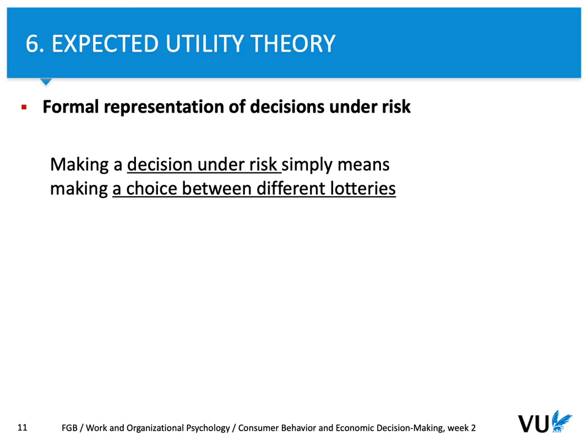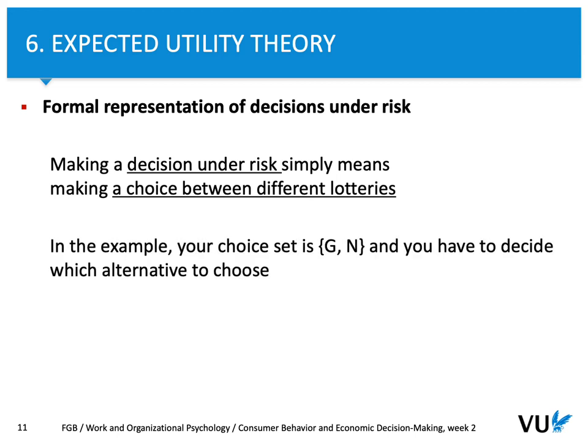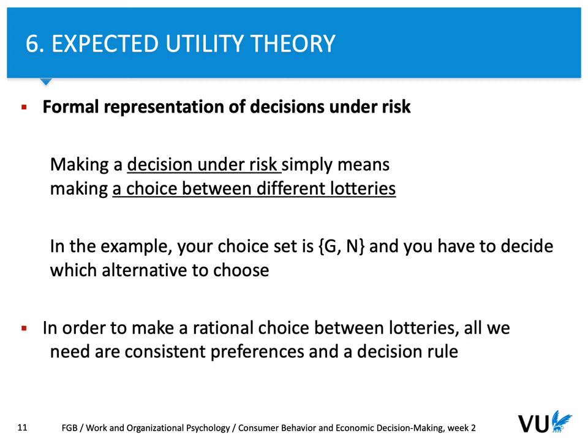Let's try to understand this theory better. When we know probabilities, we simply make a choice between different lotteries. In this case, our choice set was to either gamble or not to gamble — it was your choice whether to play the game with me or not. In order to make a rational choice between those lotteries, all we need is consistent preferences and a decision rule. I'm wondering what were your preferences and what kind of decision rule you applied.